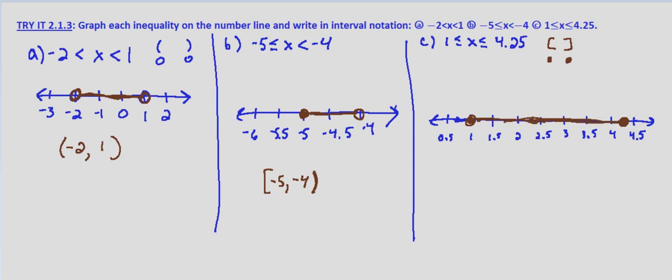So this is the inequality graphed on the number line. And in interval notation, we'll use square brackets because it's inclusive, it includes the values on the endpoints. And we're going from 1 to 4.25. And again, that would be a square bracket on that end as well.